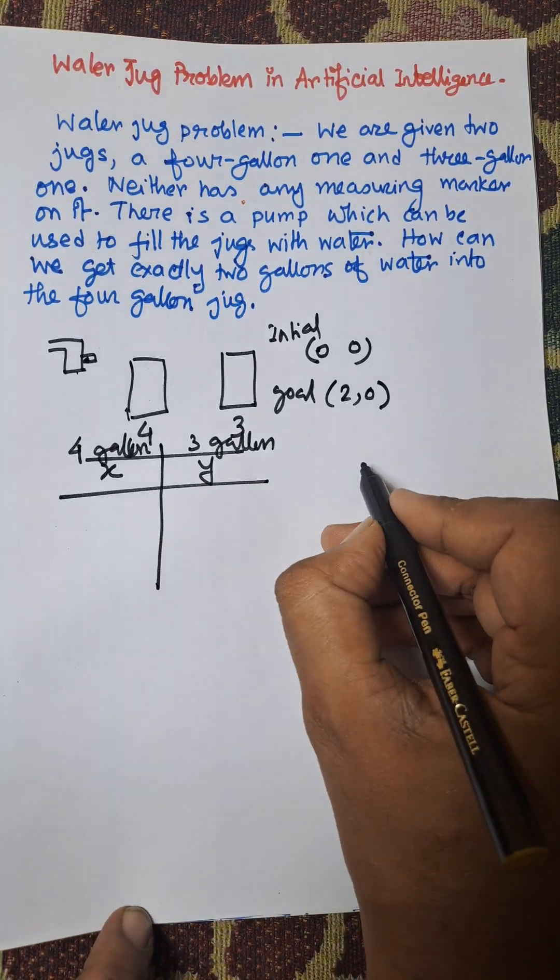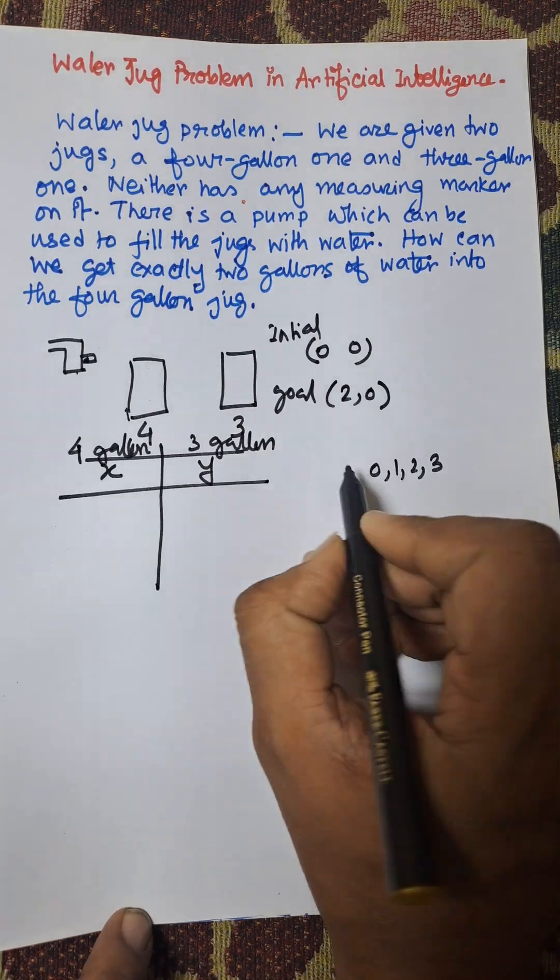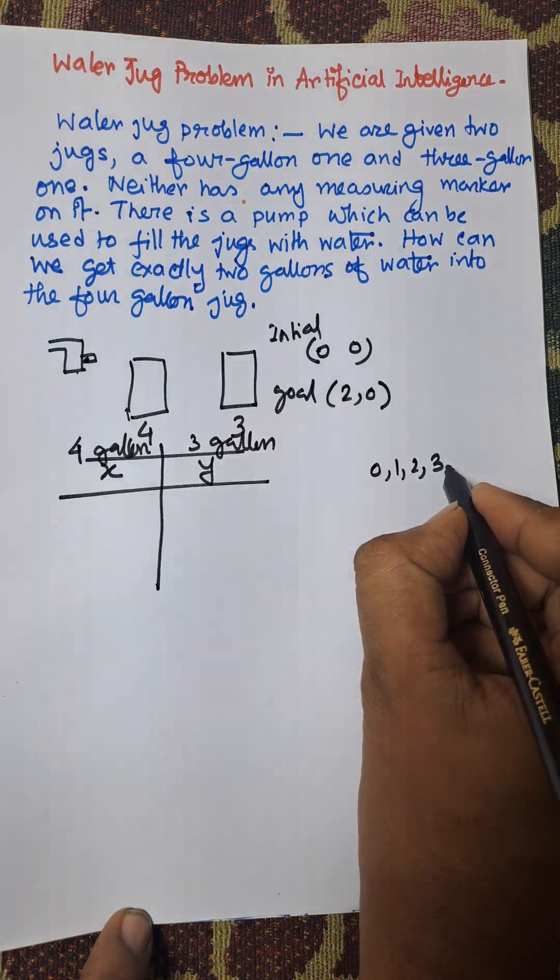So X can be either 0, 1, 2, 3, and up to 4 gallons.